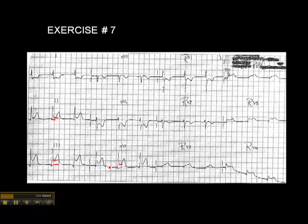We have ST elevation in three anatomically contiguous leads. Now, when we see an inferior wall MI, we look for posterior wall involvement in the form of ST depression in V1 and V2. But we don't have V1 and V2 on this cardiogram — we have RV1 and RV2, so we won't worry about it for now. Presumably, whoever did this cardiogram looked at those leads. If we look at RV4 through RV5, in RV4 it's very difficult to tell whether there's ST elevation there.